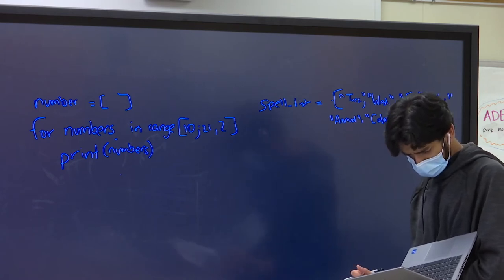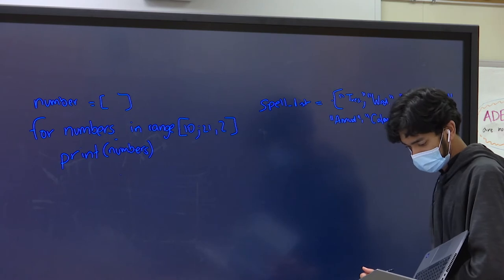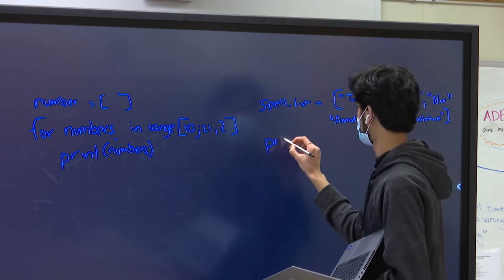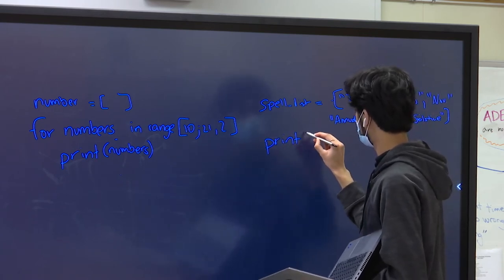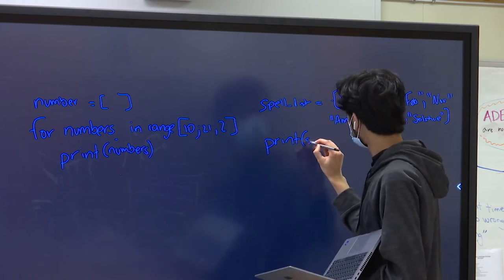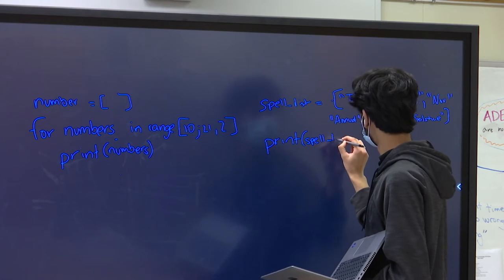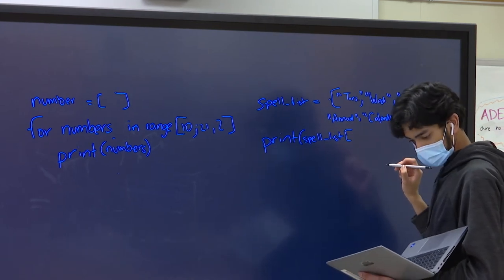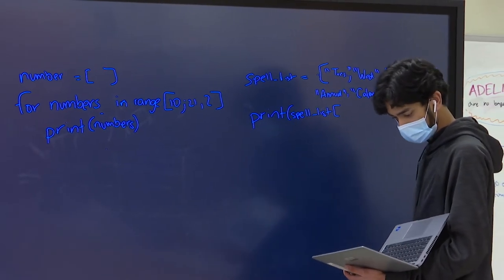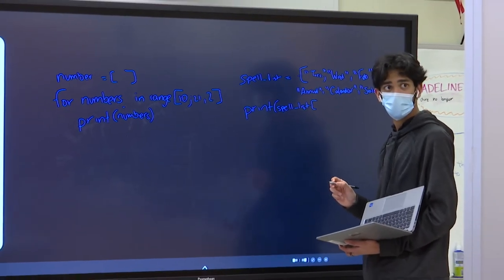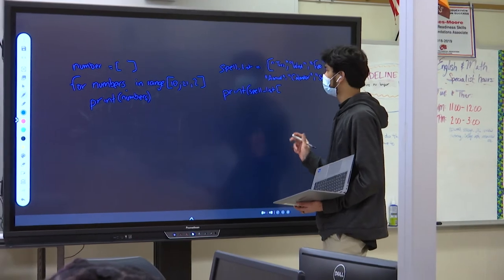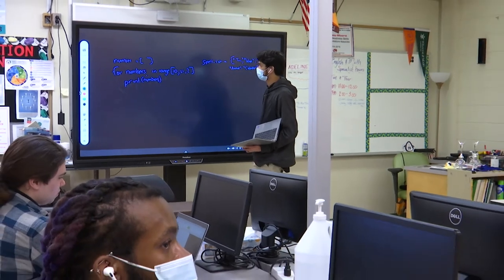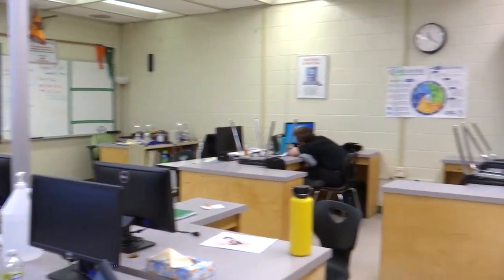The task is to print the first and every third word in spell_list. Rather than using a simple print with slice notation, the instructor suggests making it more efficient with a for loop and also using the built-in len function.